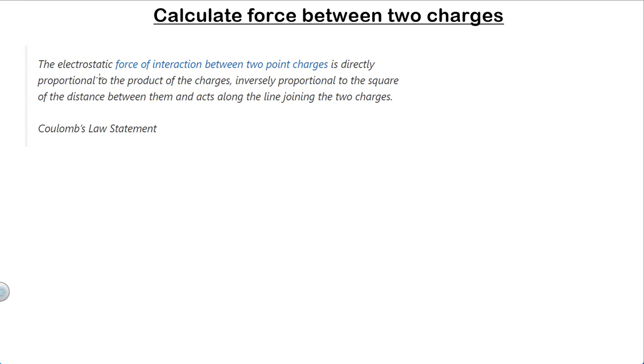Coulomb's law states that the electrostatic force of interaction between two point charges is directly proportional to the product of the charges, inversely proportional to the square of the distance between them, and acts along the line joining the two charges.